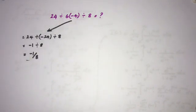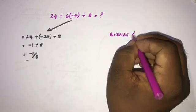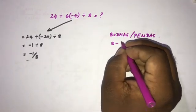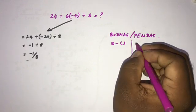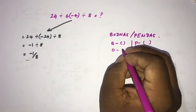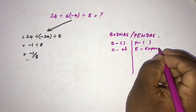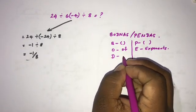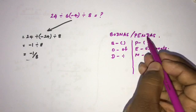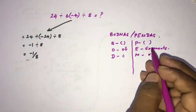Now let's look at BODMAS and PEMDAS. In BODMAS, B means bracket, O means 'of' or exponents, D means division, M means multiplication. In PEMDAS, P means parenthesis, E means exponents, D means division, M means multiplication. Some people think the BODMAS and PEMDAS rules are different, but they are the same.